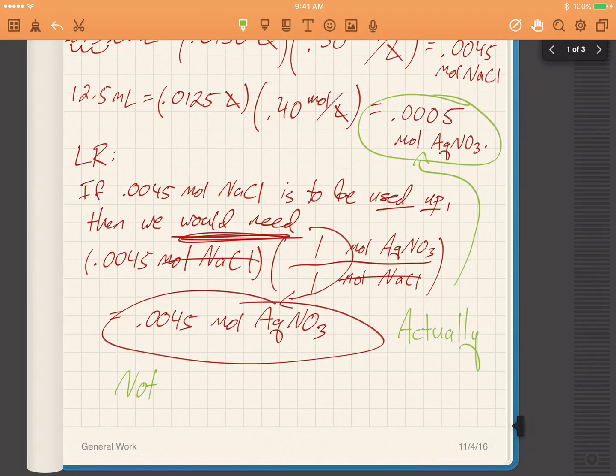So we do not have enough AgNO₃ to fully react. What does that mean? It means that AgNO₃ is the limiting reactant.